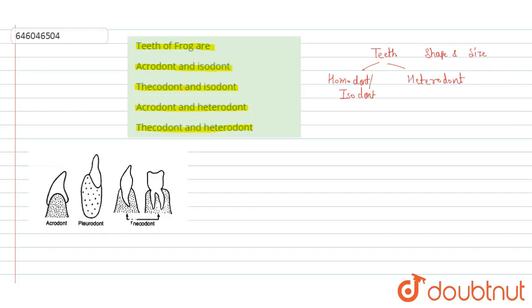When we talk about frog, the teeth in frog are homodont type. Though they have the maxillary teeth and the vomerine teeth, both the teeth are similar in shape and size. So they are isodont type.